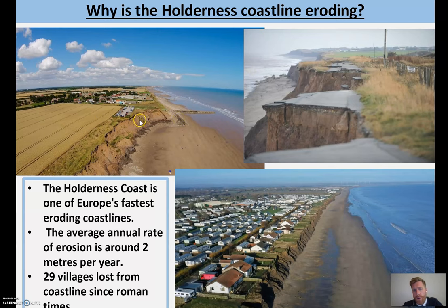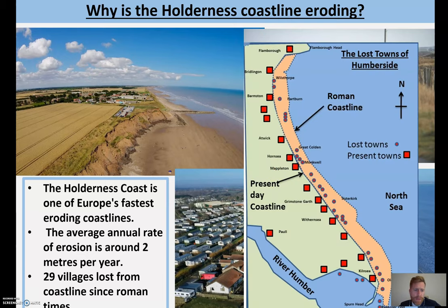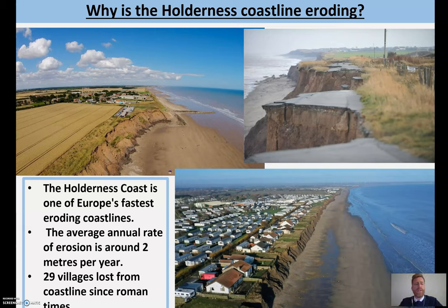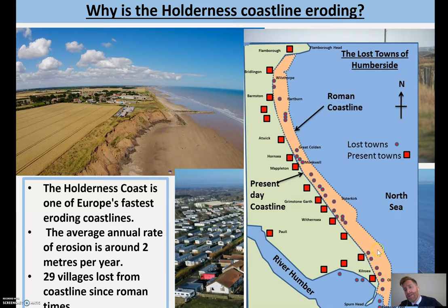There are some great pictures here of the cliffs. From the colour you can see the cliff must be made of some sort of clay, and you can see it cracking. You can see just how weak those cliffs look and how close they are to that caravan site and those houses. It's actually the fastest eroded coastline in Europe — the average annual rate of erosion is two metres a year, so two metres of the Holderness coastline is lost every single year. Since Roman times, 29 entire villages have been lost, and on this map the orange area shows what has been lost to the sea, with the Roman coastline shown as a dotted line.